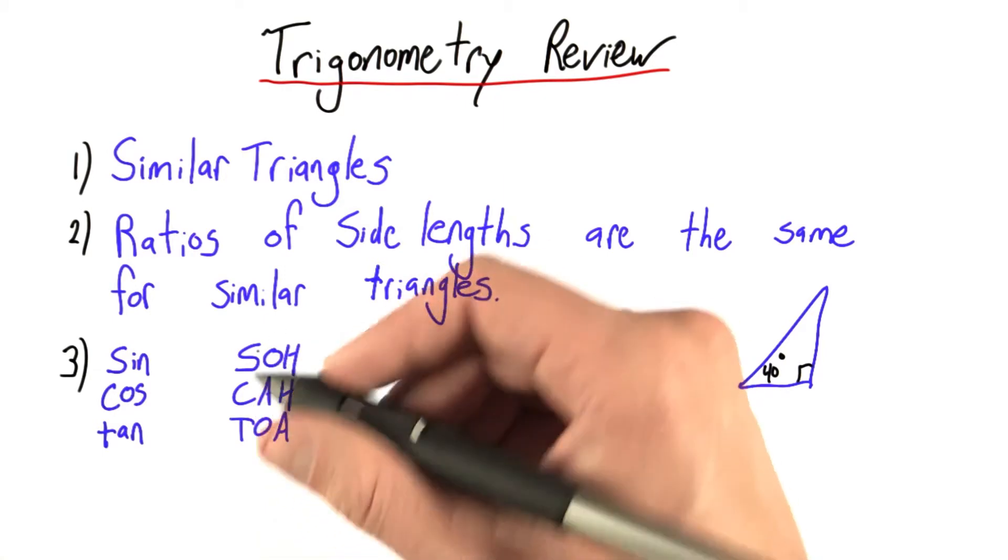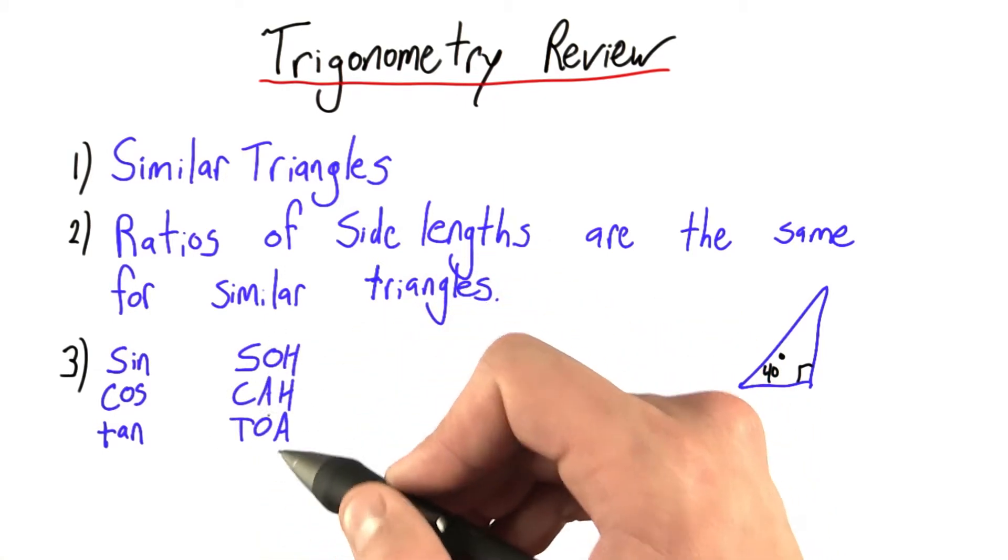Sine is opposite over hypotenuse, cosine adjacent over hypotenuse, and tangent opposite over adjacent.